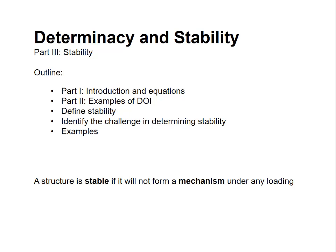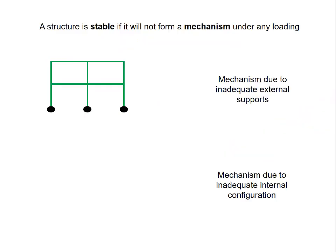In this video, we define stability. We identify how difficult it is to determine stability and why, and then we see some examples. I'll start here with the definition of stability. A structure is stable if it will not form a mechanism under any loading. Let's look at what it means to form a mechanism. We can classify this into two different types of mechanisms: mechanisms due to inadequate external supports, and mechanisms due to inadequate internal configurations.